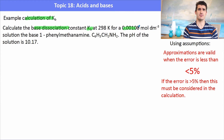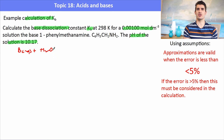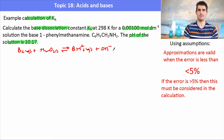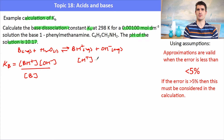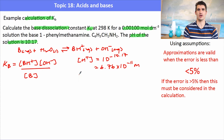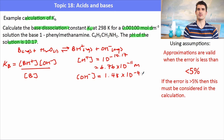Calculate the base dissociation constant Kb for a solution of phenylmethylamine with a pH of 10.17. This is a Kb calculation approached the same way using the general formula: base plus water going to BH+ and OH-. We write the Kb expression as BH+ times OH- divided by the concentration of the base. For Kb we're given pH but need OH-, so we calculate H+ first using 10 to the negative pH, then use Kw: the concentration of H3O+ times OH- equals Kw = 10⁻¹⁴. This gives us OH- = 1.48 × 10⁻⁴.